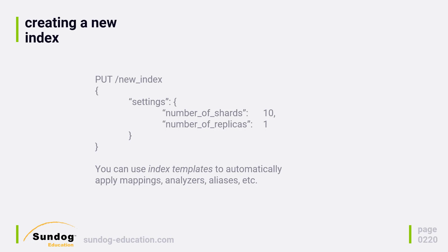To make this easier, there's also something called index templates, which is a way to automatically apply mappings, analyzers, aliases, and settings like this to any new index that gets created. Looking that up can save you some time as well. Let's get some hands-on practice doing this, because it's an important thing to have muscle memory on. Let's go ahead and actually create a new index with a specific number of shards.